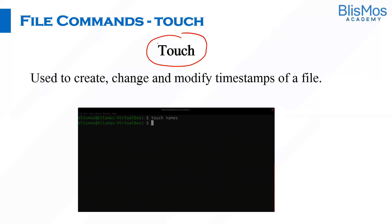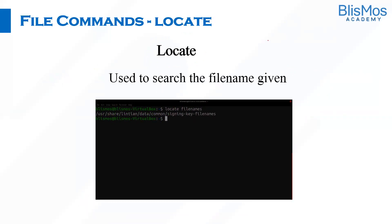The touch command helps us to create a file and also change or modify the timestamps of a file. When you want to change the timestamp of a file, you can use the touch command. You can also use this command to create a file as well. If you are trying to search for a particular file within multiple folders, the locate command will come to our help. We can use locate followed by the file name — it will provide us the path where that particular file is located.